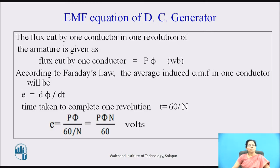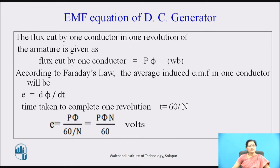The flux cut by one conductor in one revolution is given by P into phi, measured in Weber. According to Faraday's law, the average induced EMF in one conductor is given by d-phi by d-t. The time taken to complete one revolution is t equal to 60 by N. So the induced EMF E is given by P·phi divided by (60/N).